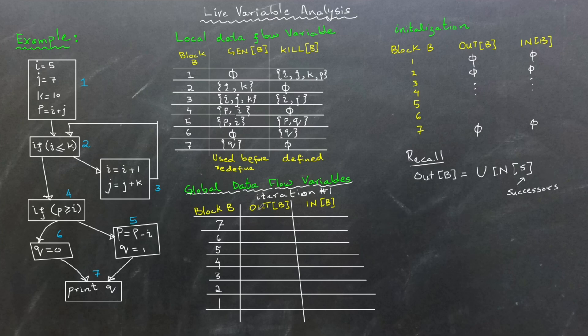Recall, out b is calculated as the union of in s set for all successor s of block b. For block 7, there are no successors because no links go out of it. So, out 7 is an empty set. In b is then calculated as the union of gen b and the difference between out b and kill b. In block 7, gen 7 include q. Since both out 7 and kill 7 are empty sets, in 7 contains only q.